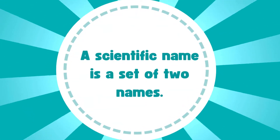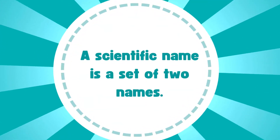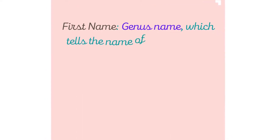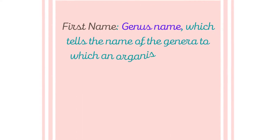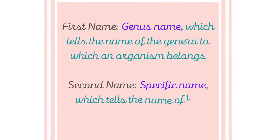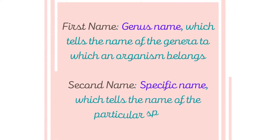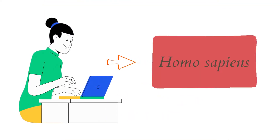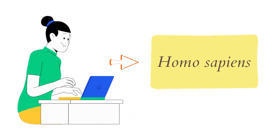As we have mentioned before, a scientific name is a set of two names, or it comprises two names. The first name is the genus name, which tells the name of the genera to which an organism belongs. The second name is the specific name, which tells the name of the particular species. For example, the scientific name of the evolved humans that we are today is Homo sapiens.